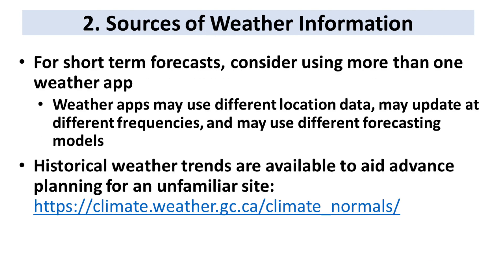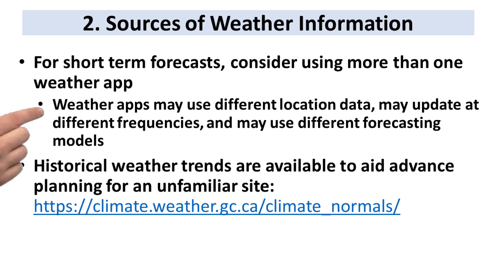If you were a normal person, you would get most of your weather information from your phone. Of course you're going to get your weather information from your phone, but there are some other things we should touch on. For your short-term forecasts, consider using more than one weather app. Weather apps may use different location data, update at different frequencies, and may use different forecasting models. Having a couple of points of view might help you avoid a problem.